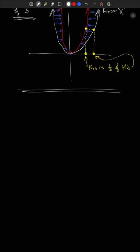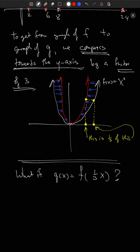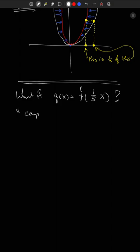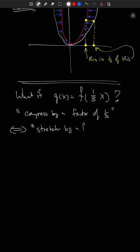What if instead we had g(x) = f(⅓x)? You would compress by a factor of one-third, which is equivalent to stretching by a factor of three away from the y-axis. For example, if f(6) = 10, we solve ⅓x = 6, getting x = 18. So g(18) = 10 — we moved away from the y-axis. That's why this is a stretch by a factor of three.